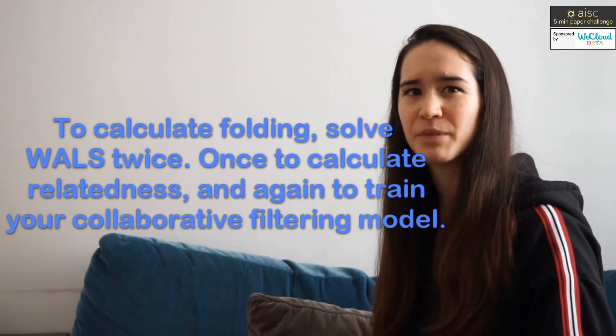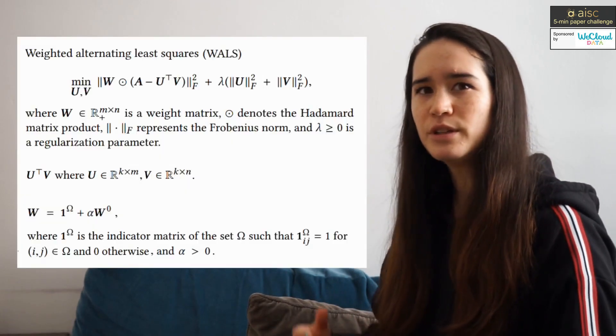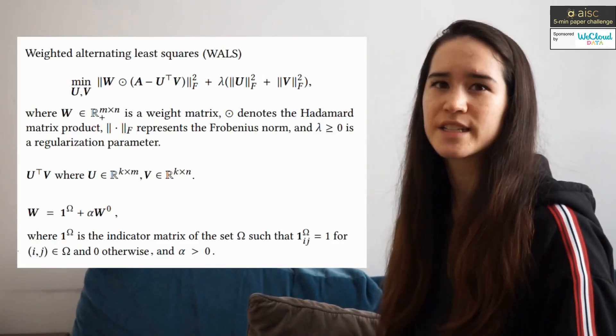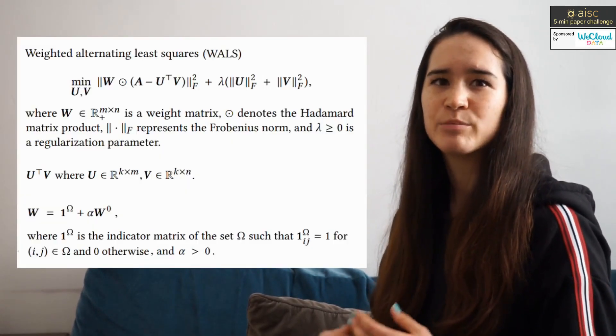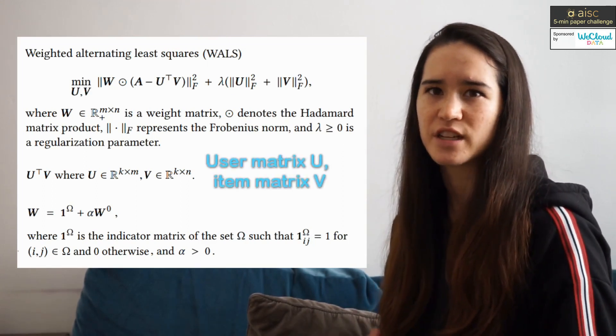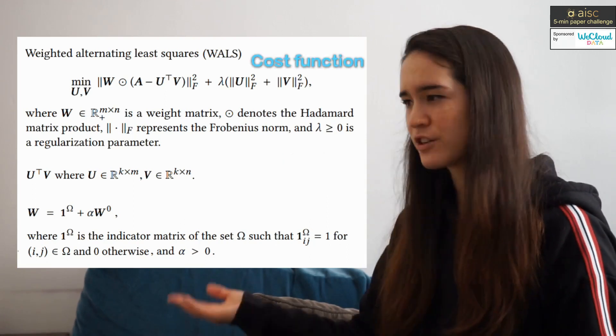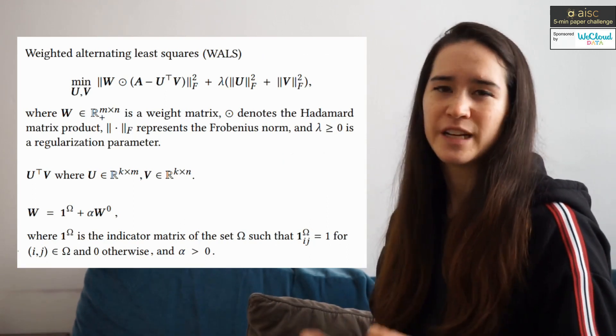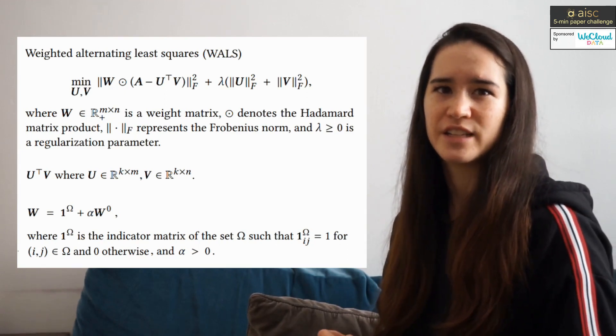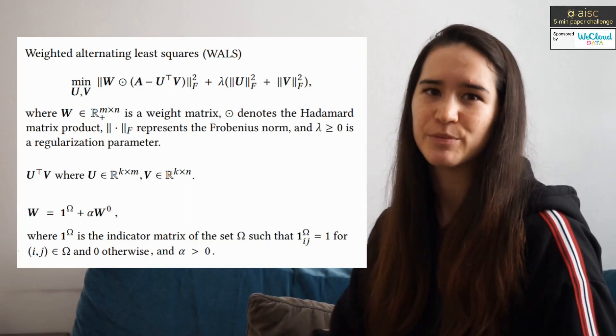So folding is calculated by solving weighted alternating least squares twice. So the goal of weighted alternating least squares is to approximate the partially defined user item matrix A with low-rank K approximations of user and item vectors. This is achieved by minimizing this cost function, alternatingly fixing user factors and solving for item factors and vice versa until the learned factors don't change much.